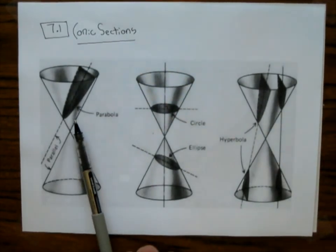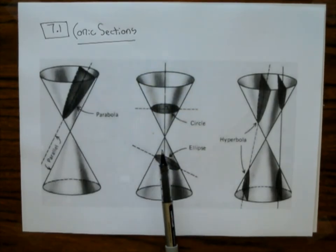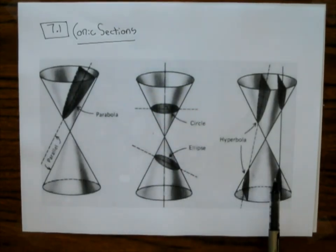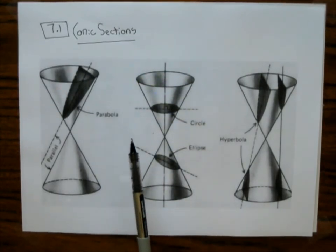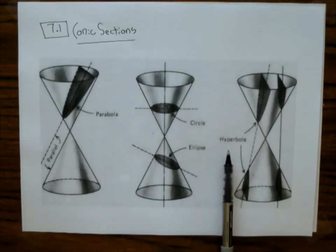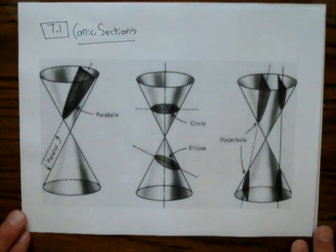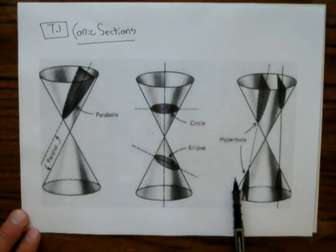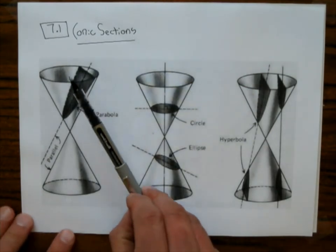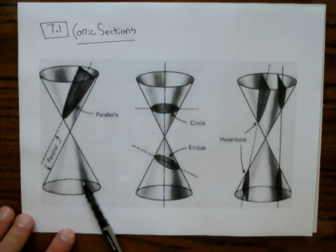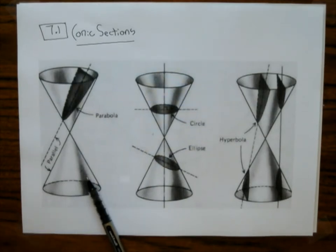Those four shapes — circle, parabola, ellipse, and hyperbola — are called conic sections. They'll be covered in sections 7.2 through 7.5. Section 7.2 will be the circle, 7.3 the parabola, 7.4 the ellipse, and 7.5 the hyperbola. The images here are a bit blurry — I grabbed them from a website — but that completes 7.1. There's really no homework in 7.1; the first homework is in 7.2.